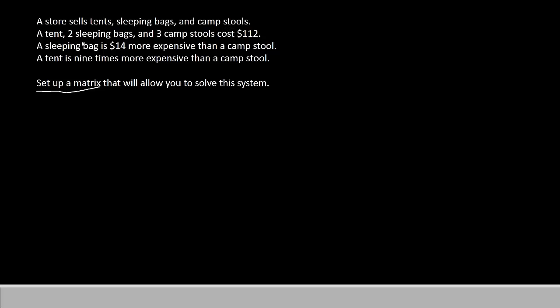A tent with two sleeping bags and three camp stools costs $112. A sleeping bag is $14 more expensive than a camp stool, and a tent is nine times more expensive than a camp stool. In order to set up a matrix for this problem, we first need to assign letters to each of the concepts.